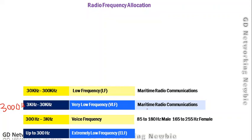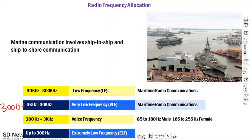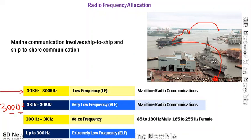VLF and LF frequencies are used in maritime radio communication, which involves marine communications — specifically ship-to-ship and ship-to-shore communications. For example, different ships may communicate with each other, or communicate at the shore. All communication involving these ships is known as maritime radio communication, and VLF and LF are the frequency ranges mostly used for that purpose.